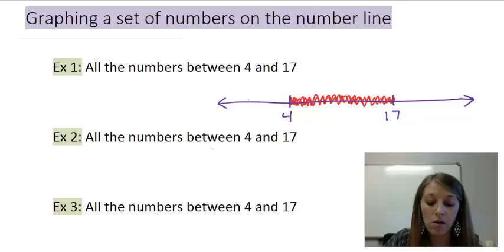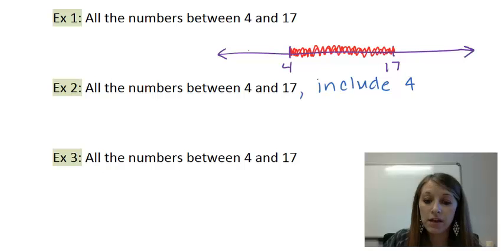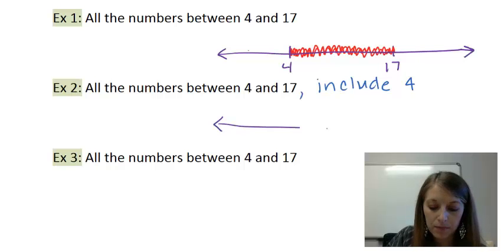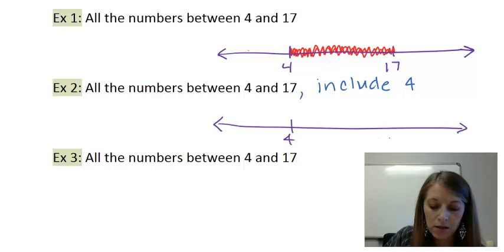Example 2, I'm going to say all the numbers between 4 and 17, but this time I'm going to include one of the endpoints. I'm going to include the left-hand endpoint 4, and I could have included the right-hand endpoint just the same. If I graph these on a number line, I'd start the same way. Start with my number line, write down the numbers 4 and 17, I'm going to shade them in between.